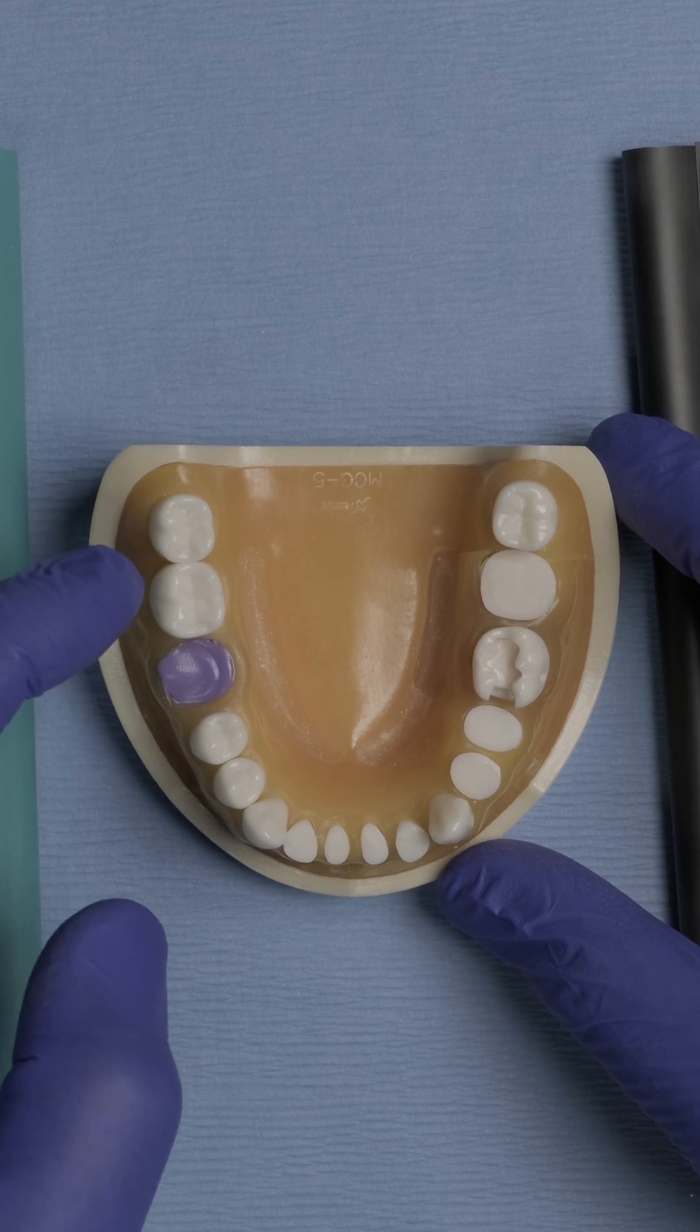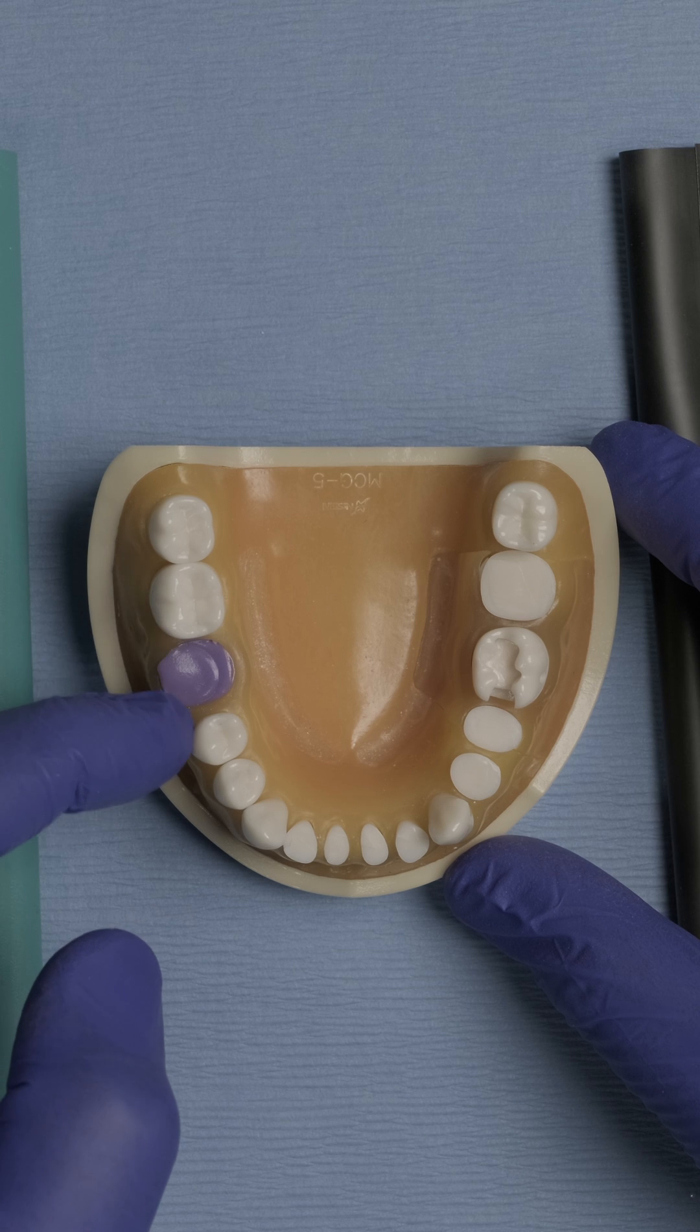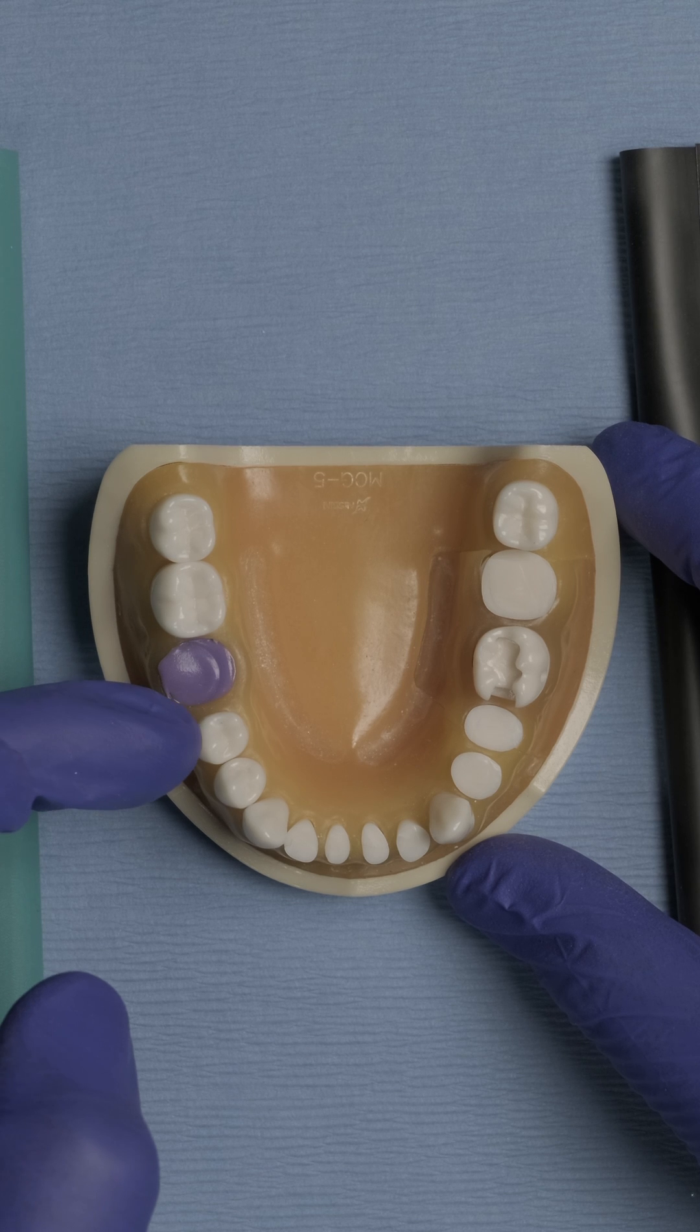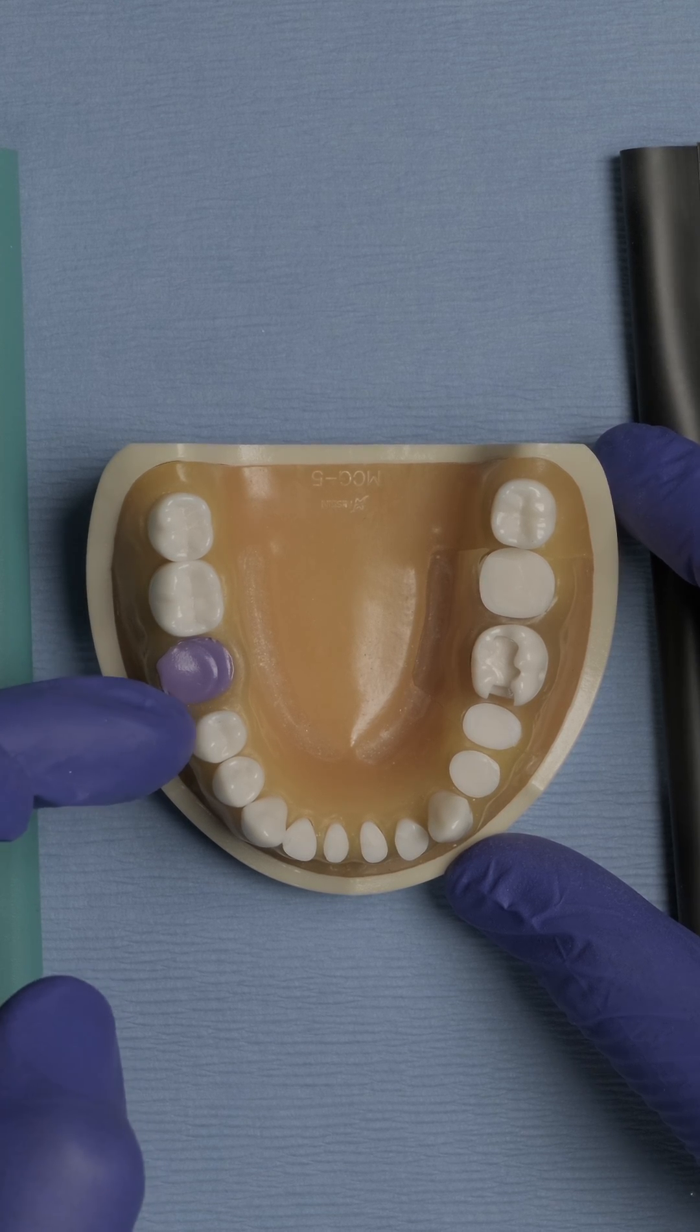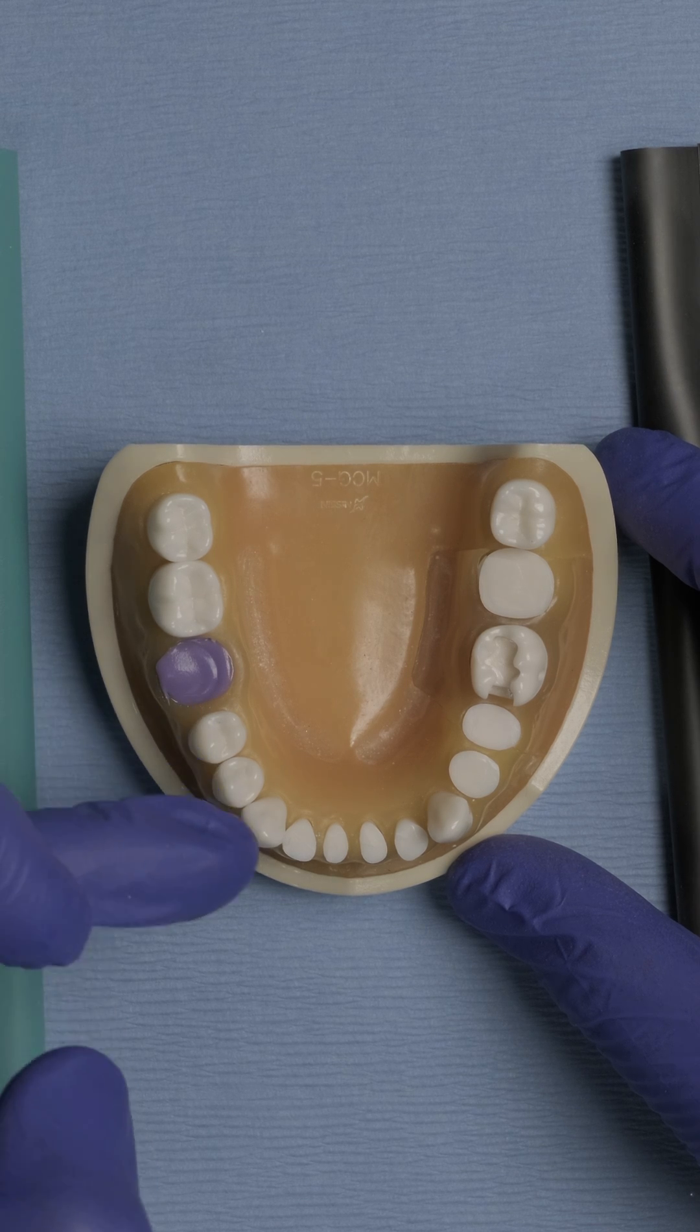So we're going to use a clamp around tooth number 31. We're going to allow the rubber dam to seal the area between 31 and 29, and then we'll also include in our isolation teeth 29, 28, and 27.